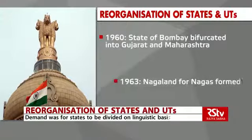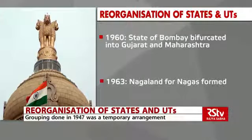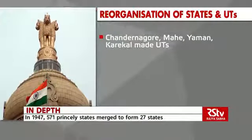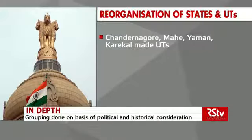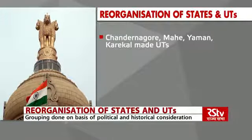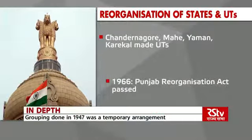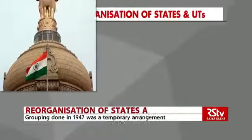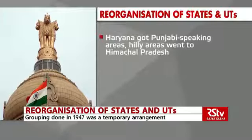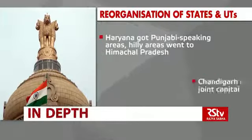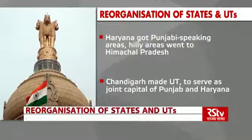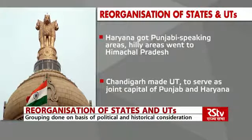Next came Nagaland in 1963 for the Nagas. Chandranagore, Mahe, Yanam and Karikal, freed from France, and Goa, Daman and Diu from the Portuguese were made into union territories or joined neighbouring states. In April 1966, the Punjab Reorganisation Act was passed, giving Haryana the Punjabi-speaking areas while hilly areas went to the union territory of Himachal Pradesh. Chandigarh was made a union territory to serve as the joint capital of Punjab and Haryana.